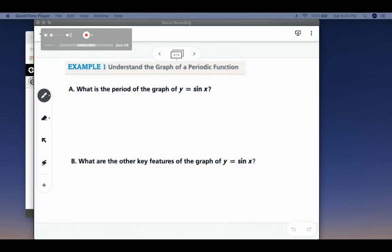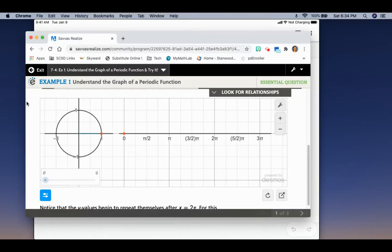So the first question is, what is the period of the graph of y equals sine of x? I'm purposely doing the video this way because I wanted to illustrate how we go from the unit circle to the graph. Sine of x, remember, is talking about the y values. If we think about on our unit circle, we start out right here at 0 degrees, and our y value right here would be 0.